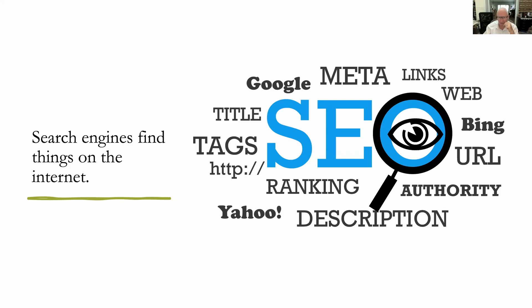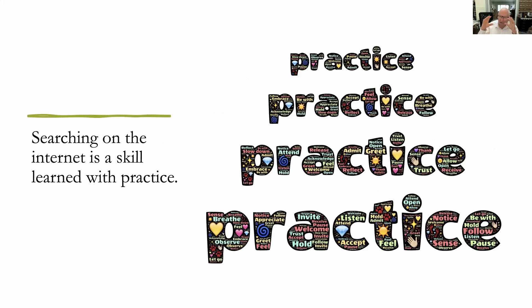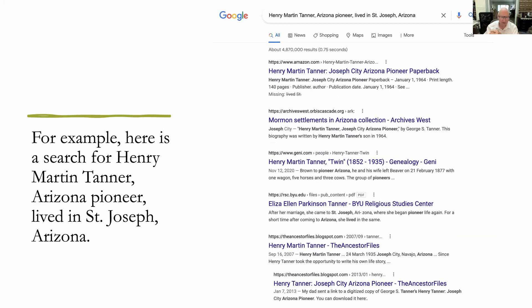If you don't get anything else from this, understand that searching is a skill. Searching on the internet is a skill — it's something you have to learn. It's not something you can just sit down and expect to have results. It's something you have to do over and over again. So let me give you an example. I'm going to search for Henry Martin Tanner, an Arizona pioneer who lived in St. Joseph, Arizona.